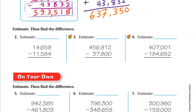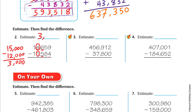Now estimate, then find the difference. We round to the digit before the last digit. For the first number, to the right of the four we have six — six is strong, so the four becomes five: fifteen thousand. For the second number, we round to the one; to its right is five — five is strong, so the one becomes two: twelve thousand. Fifteen thousand minus twelve thousand is three thousand. Our estimate is three thousand.